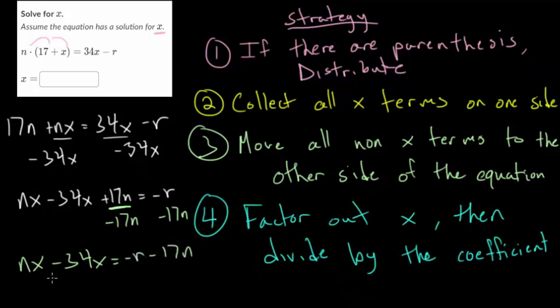And now step four, notice we have our x's together, but we can't combine their coefficients in a meaningful way. So we have to factor out the x and then whatever that expression is divide through by that. So with factoring we notice both of them have an x term in it. So we can factor that out. We're essentially we're dividing both of those terms by x. And dividing this by x you'd be left with n. Dividing this by x you'd be left with negative 34. And the right hand side is still the same minus r minus 17n.